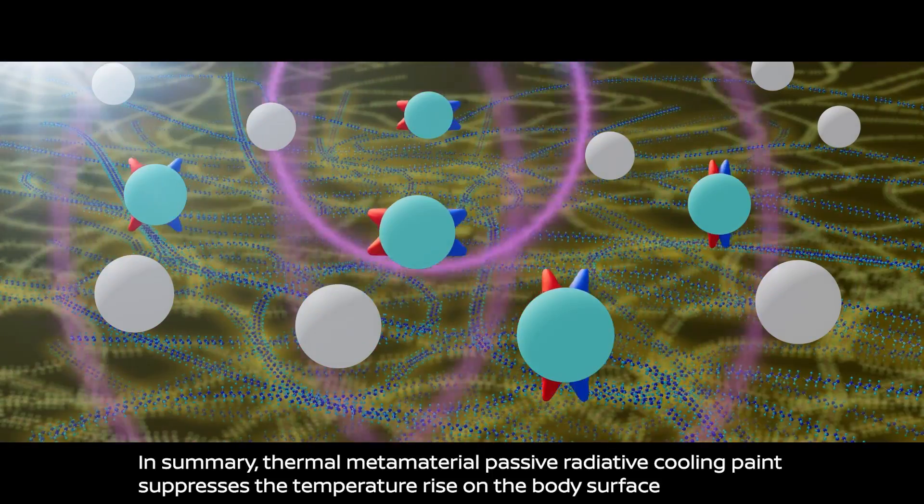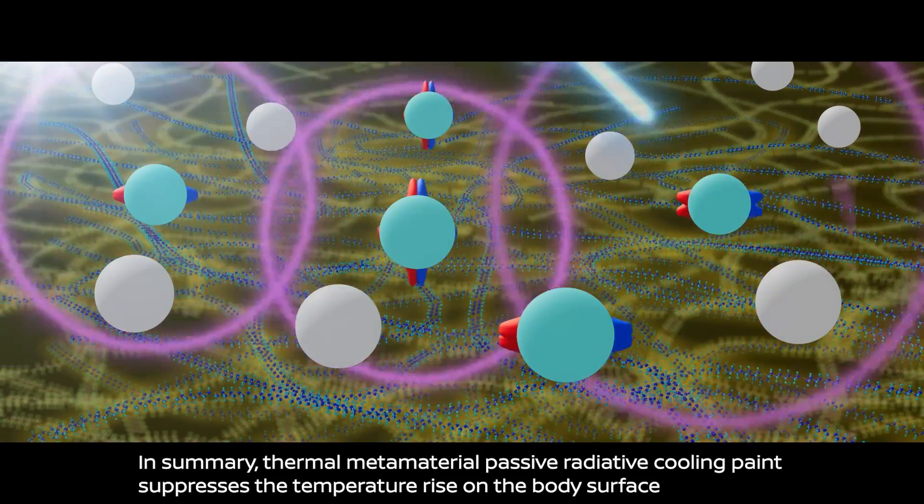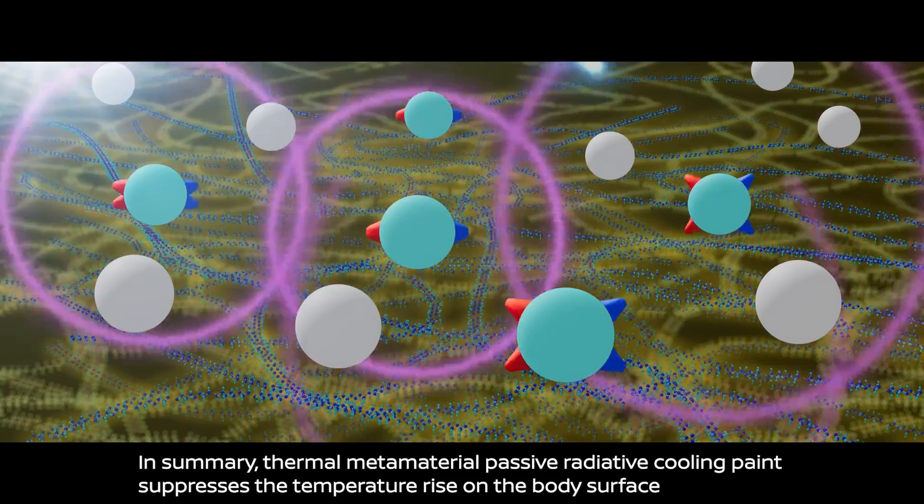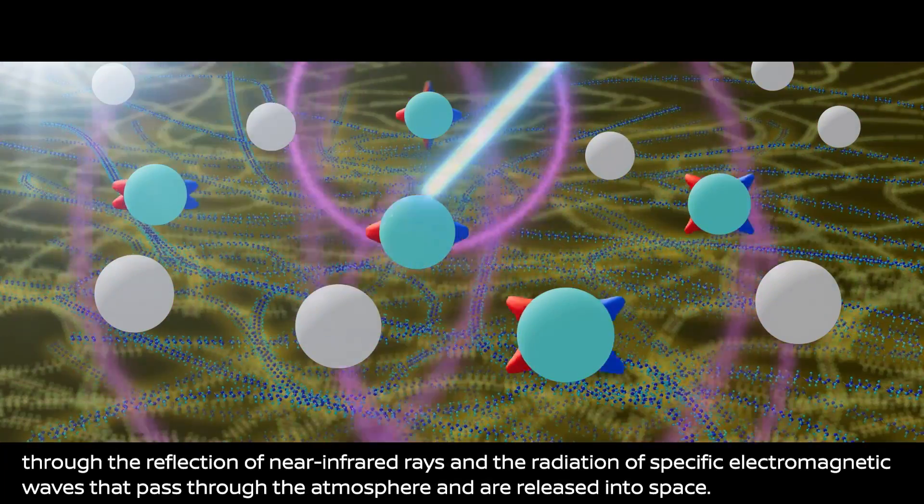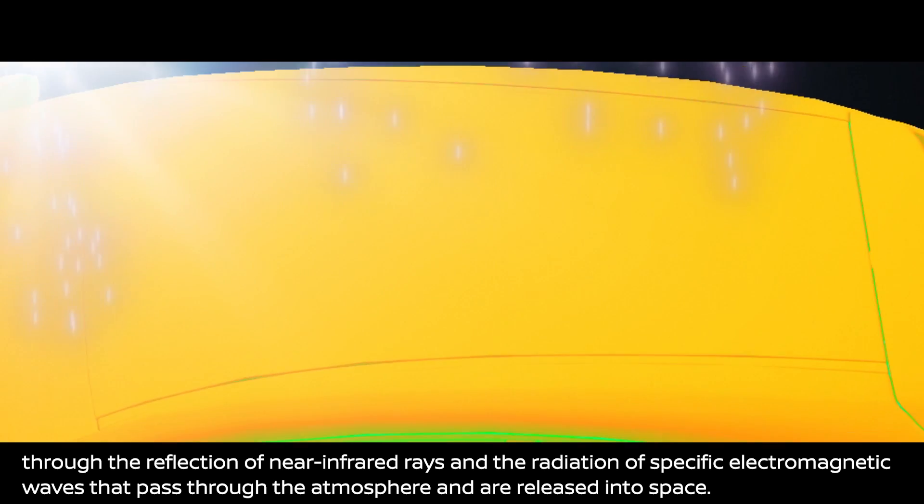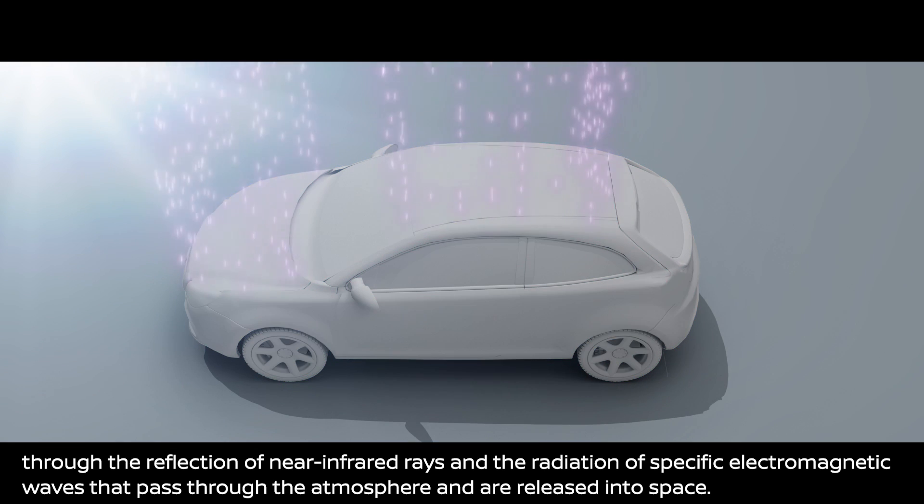In summary, Thermal Metamaterial Passive Radiative Cooling Paint suppresses the temperature rise on the body surface through the reflection of near-infrared rays and the radiation of specific electromagnetic waves that pass through the atmosphere and are released into space.